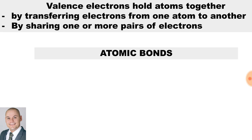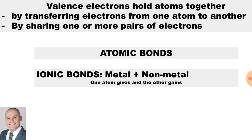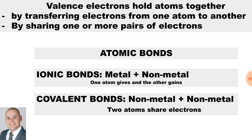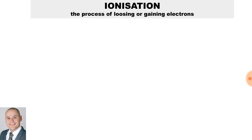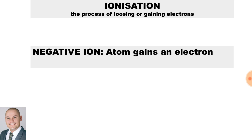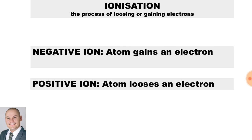There are two types of atomic bonds. We get ionic bonds, which consist of a metal and a non-metal, and covalent bonds, which consist of a non-metal and a non-metal. The process of ionization is the losing or gaining of electrons. A negative ion is when an atom gains an electron, and a positive ion is when an atom loses an electron.